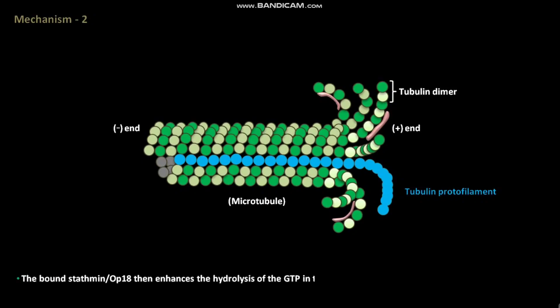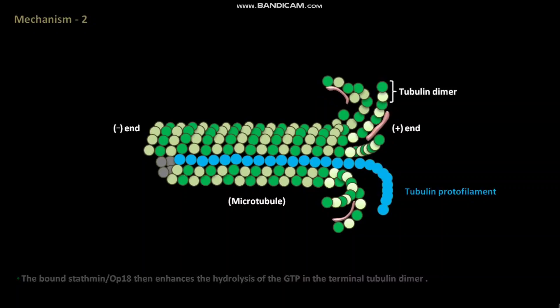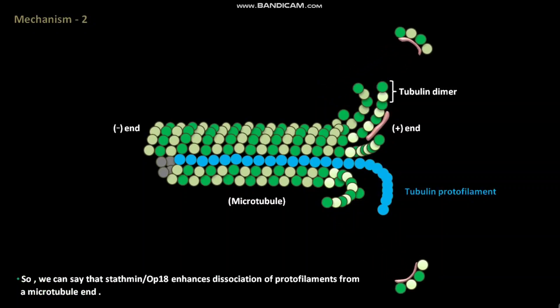A protein called stathmin or OP18 binds selectively to two tubulin dimers in a curved GDP-β tubulin-like conformation. The bound stathmin or OP18 then enhances the hydrolysis of GTP in the terminal tubulin dimer. By this GTP hydrolysis, stathmin or OP18 enhances the removal of two tubulin dimers, enhancing dissociation of protofilaments from the microtubule end.